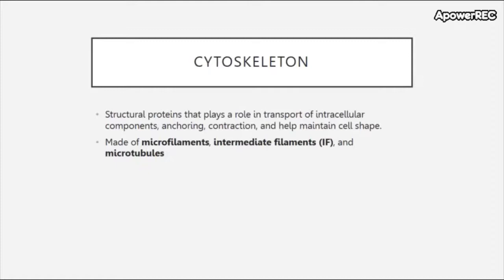Next up we have the cytoskeleton. The cytoskeleton is a collection of structural proteins. These play a role in transport of intracellular components, anchoring of components in the cell and the cell onto things, contraction of the cell which can be important for motility, and to help maintain the cell shape. There are three main types: microfilaments, intermediate filaments, and microtubules.